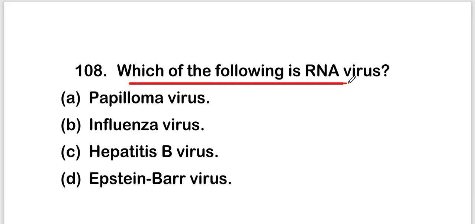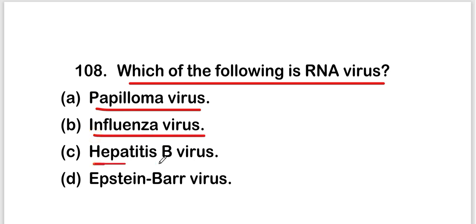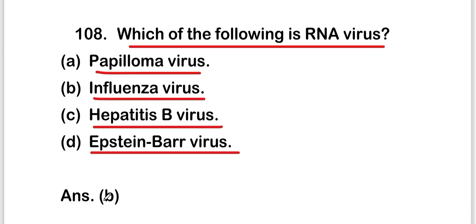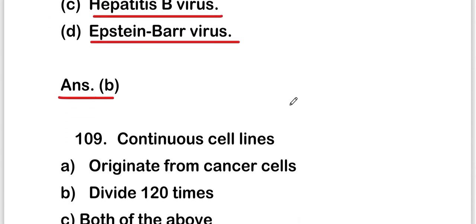The next question is: which of the following is an RNA virus — papilloma virus, influenza virus, hepatitis B virus, or Epstein-Barr virus? The right answer is option B, that is influenza virus. Influenza virus is an RNA virus.